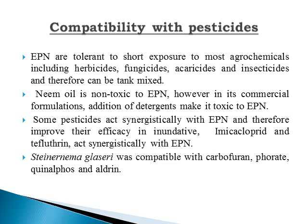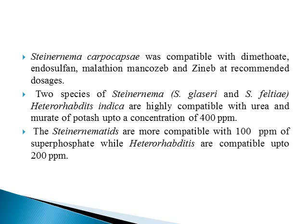Steinernema glaseri was compatible with Carbofuran, Furadan, Phoral, Phorate, and Aldrin. Steinernema carpocapsae was compatible with Dimethoate, Endosulfan, Malathion, Mancozeb, and Zineb at recommended doses. Two species of Steinernema — S. glaseri and S. feltiae — and Heterorhabditis indica are highly compatible with Urea and Muriate of Potash up to a concentration of 400 ppm. Steinernema feltiae is more compatible with superphosphate at 100 ppm, while Heterorhabditis is compatible up to 200 ppm.